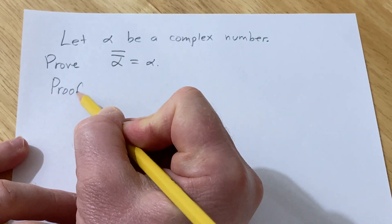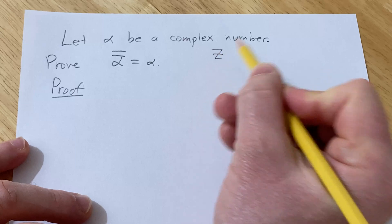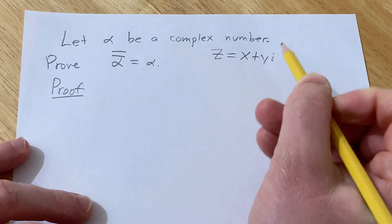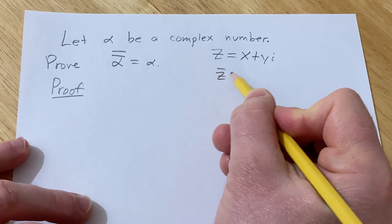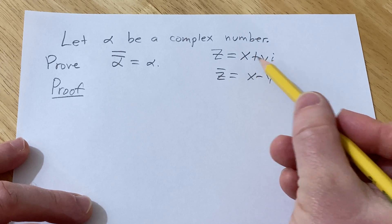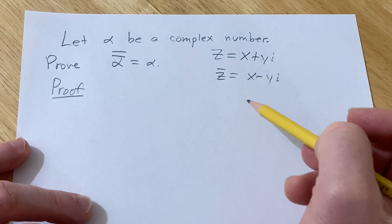Proof. So first recall if you have a complex number say z equals x plus yi, the conjugate of z is simply x minus yi. All you do is you change the sign between the real and imaginary parts to get the conjugate.